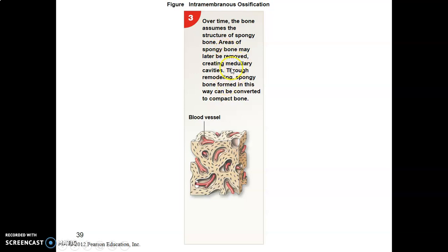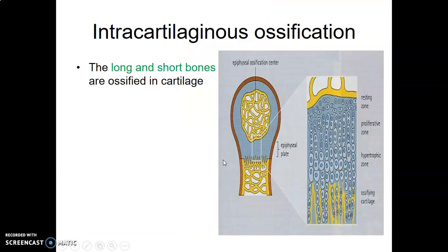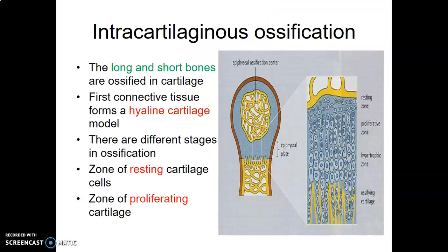In endochondral ossification, mesenchymal cells first form hyaline cartilage before it ossifies to form bone. This occurs mainly in long and short bones, in contrast to intramembranous ossification which occurs in flat bones of the skull, face, and the lateral end of the clavicle. The zones of ossification during endochondral ossification from hyaline cartilage are an important topic.